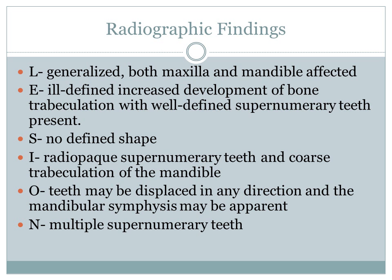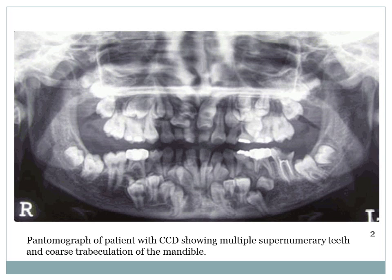Radiographic findings are generalized throughout both the maxilla and mandible. The edges are ill-defined with increased bone tuberculation and well-defined supernumerary teeth. Internal structures include radiopaque supernumerary teeth and coarse trabeculation of the mandible. Teeth may be displaced in any direction, and the mandibular symphysis may be apparent. A pantomograph of a patient with CCD demonstrates multiple supernumerary teeth and coarse trabeculation of the mandible.